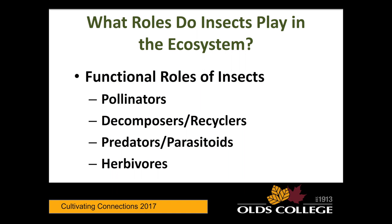It's not just bees — bumble bees, leaf cutter bees, digger bees, sweat bees, plaster bees. There's a whole host of species. There are 27 species of bumble bee alone known from Alberta, about 400 species of other native bee in Alberta, and 22,000 species of bees worldwide.